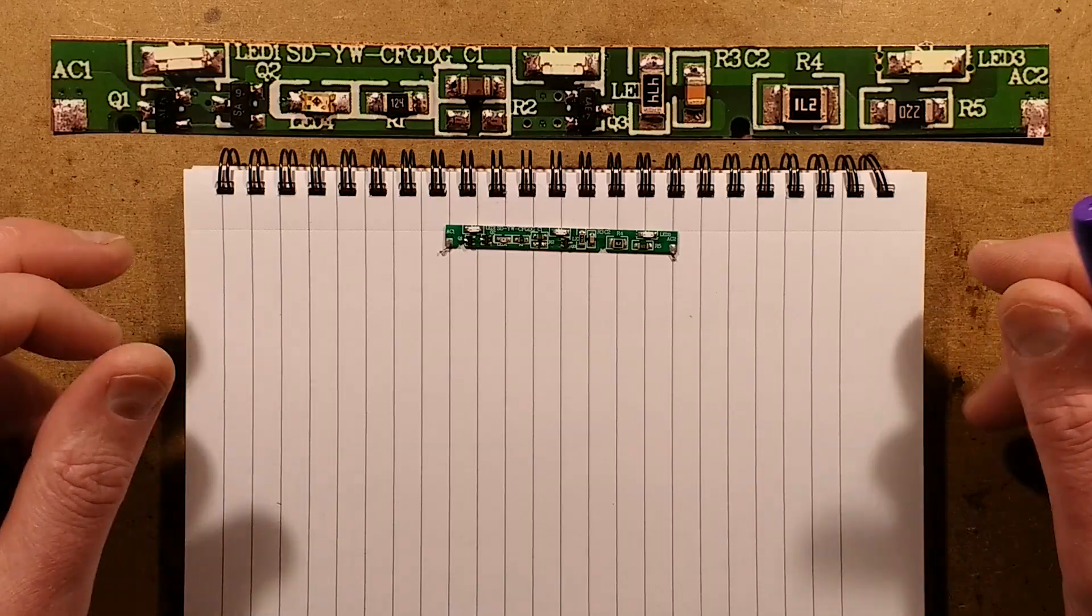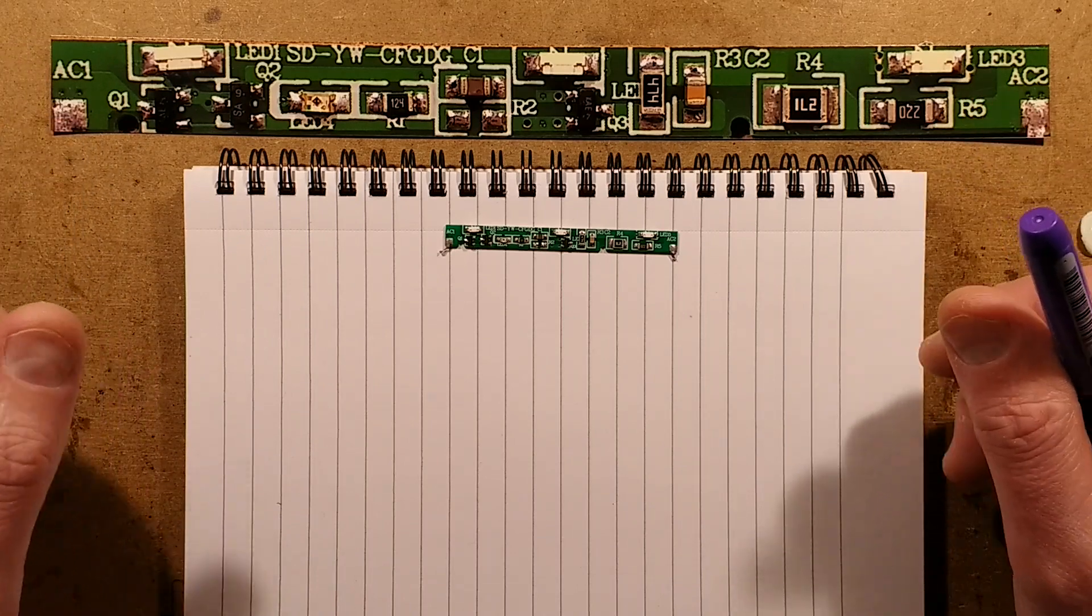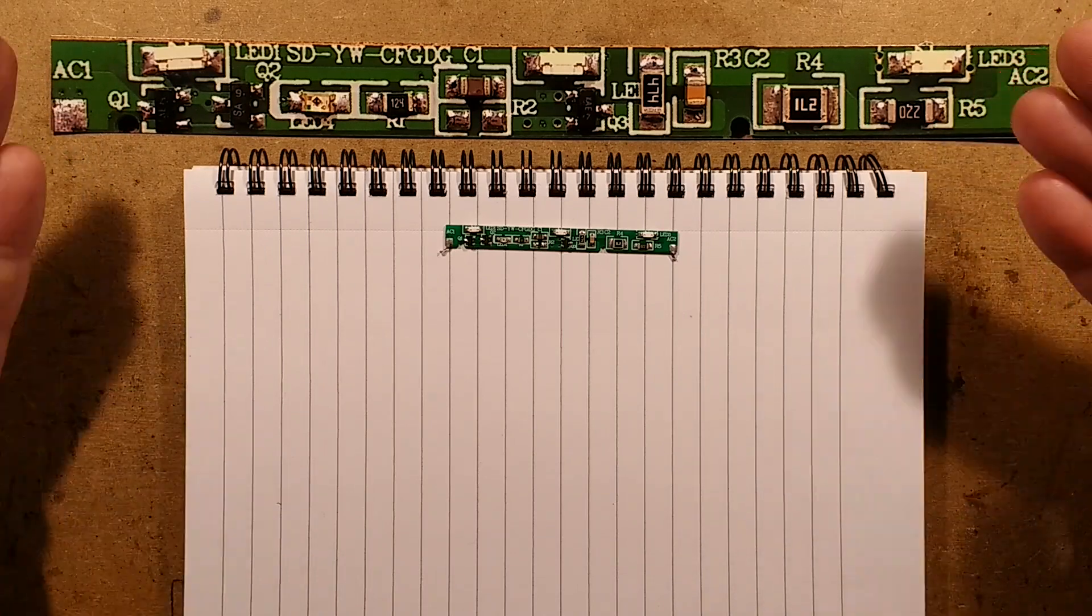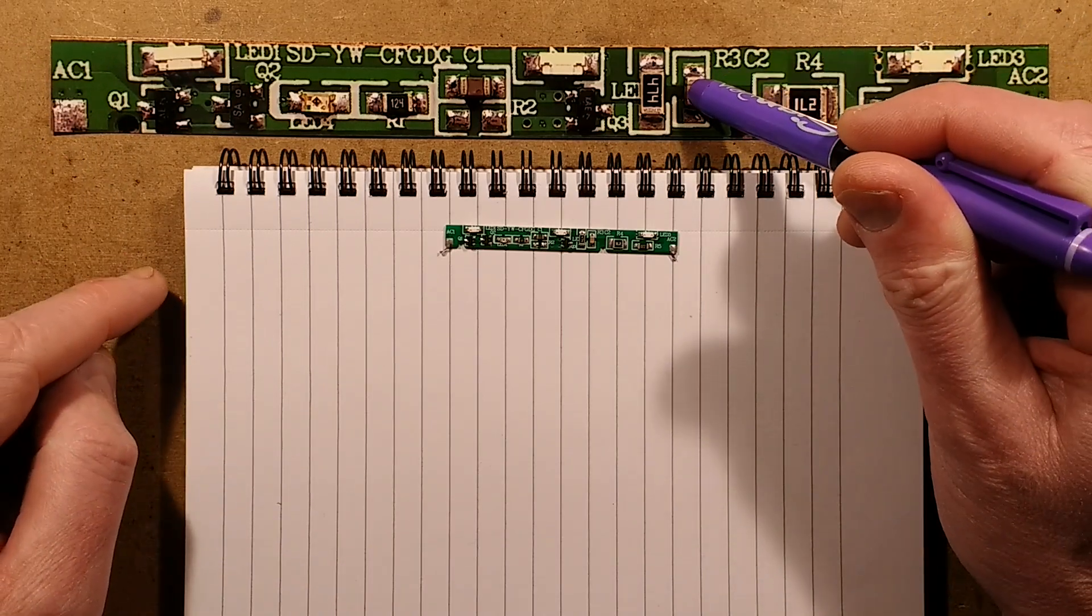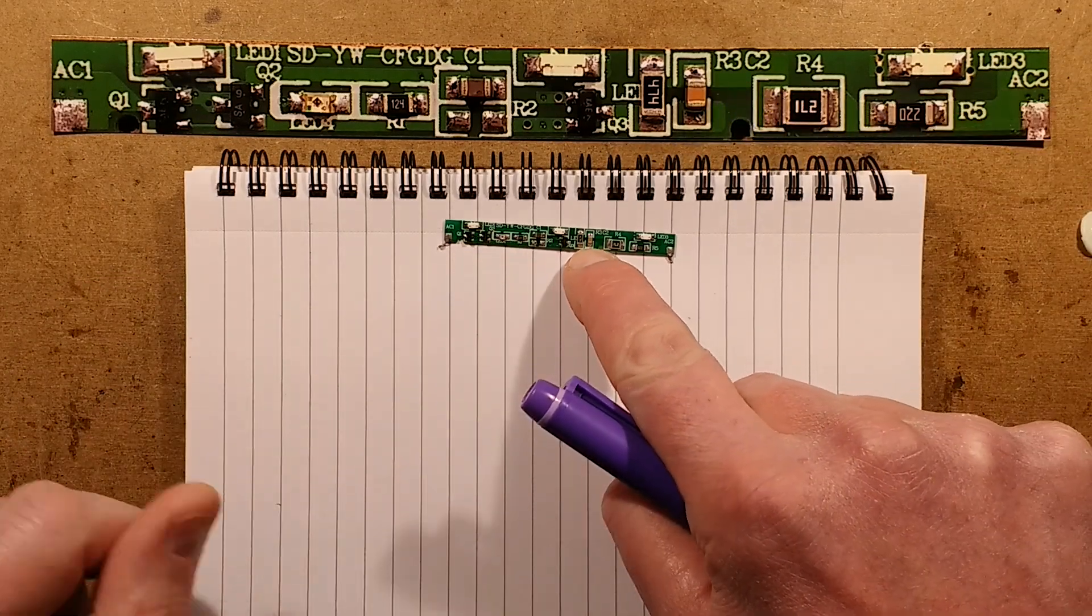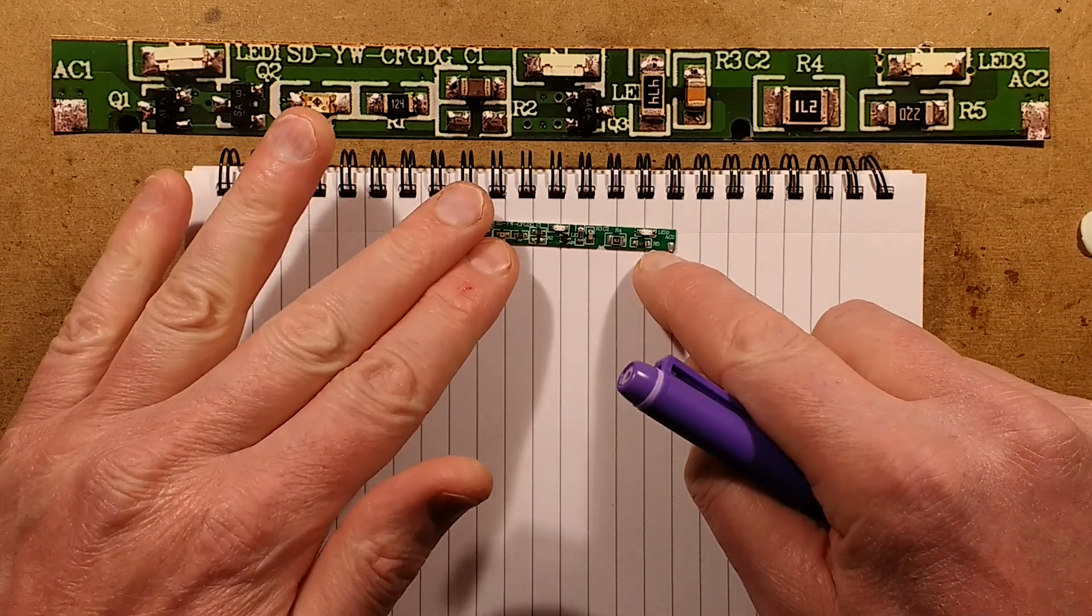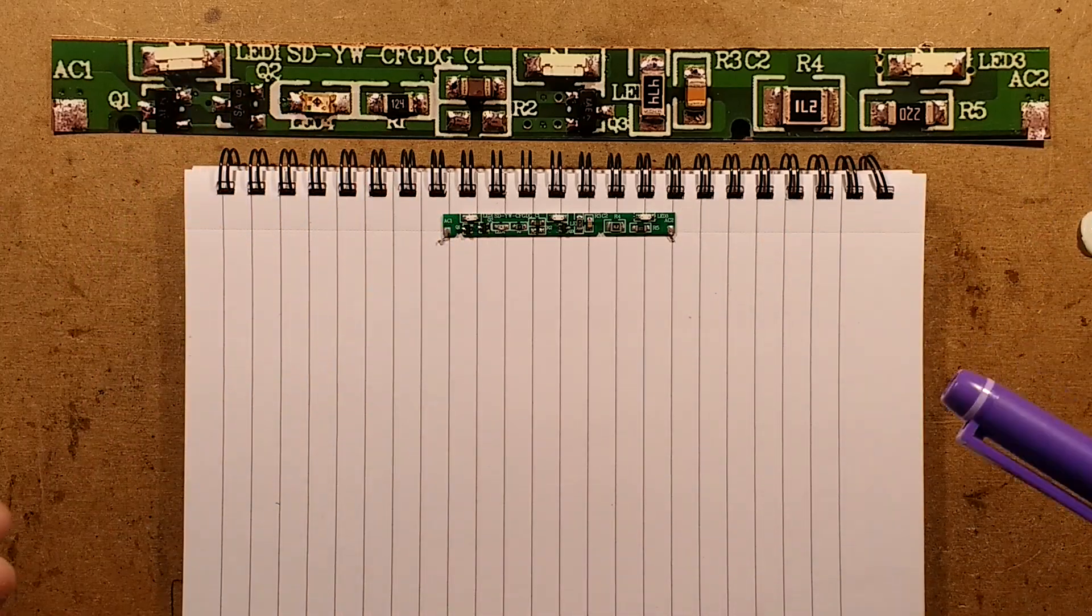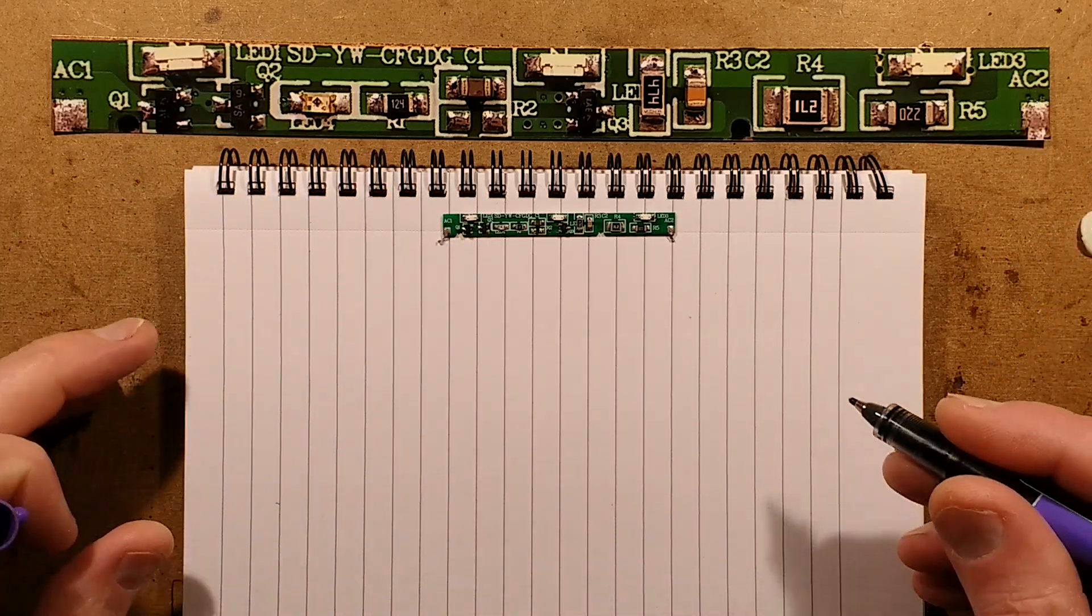I have to admit, this is actually more sophisticated than I was expecting. It is actually using a capacitive dropper, and the capacitor is tiny. This is the capacitor it's using as the main dropper capacitor here. It's minute. I wonder what the voltage rating of that is. Let's reverse engineer it.